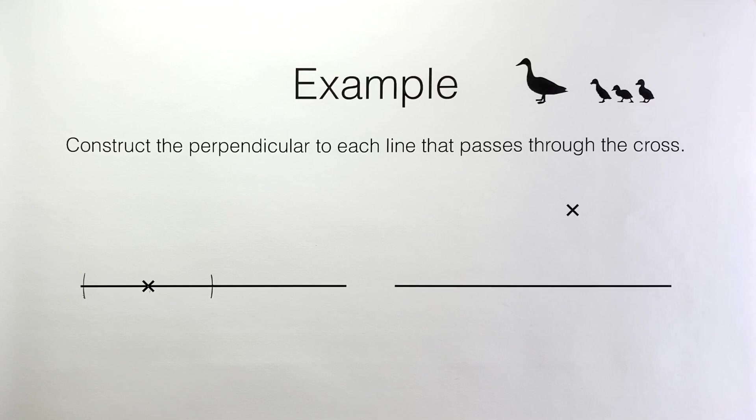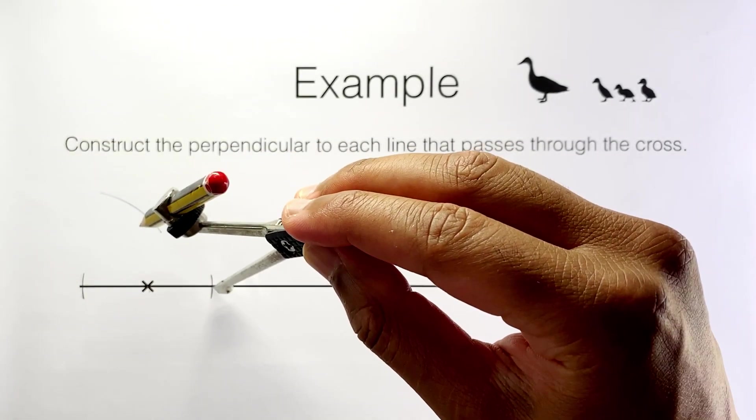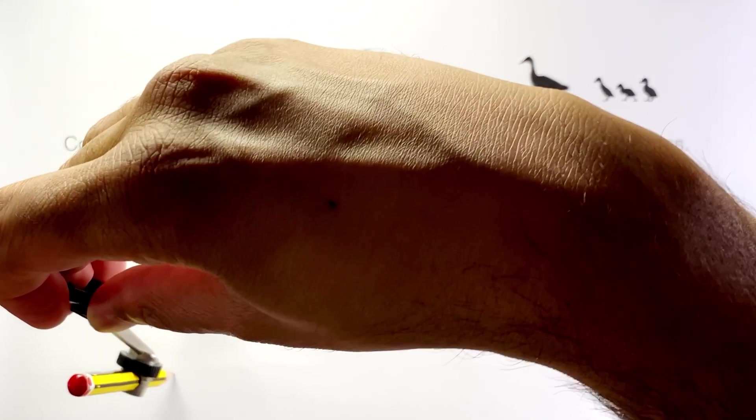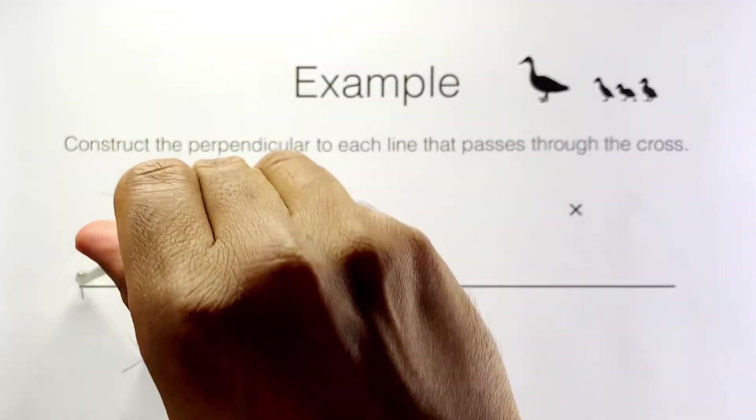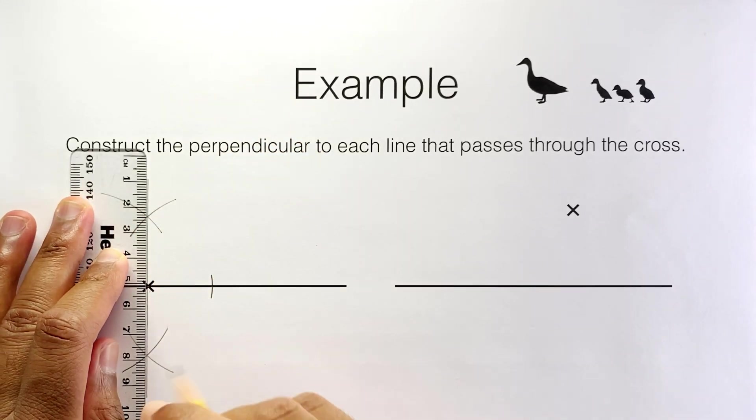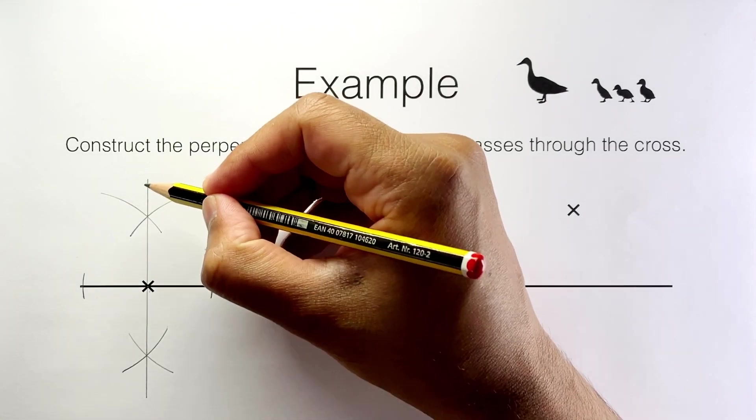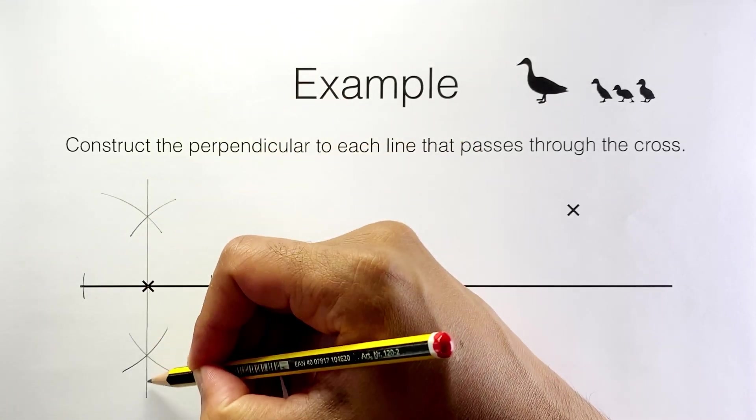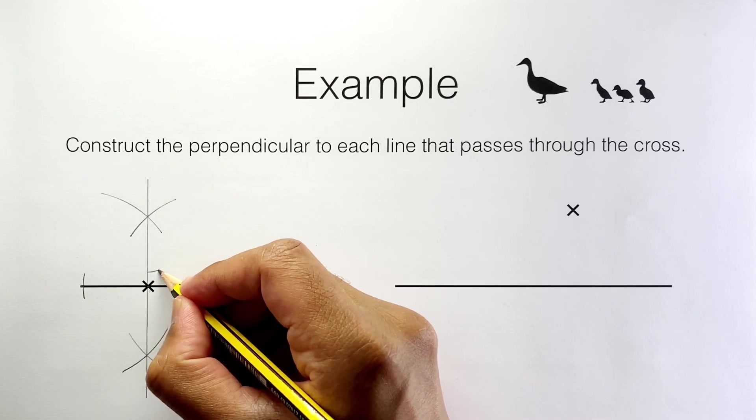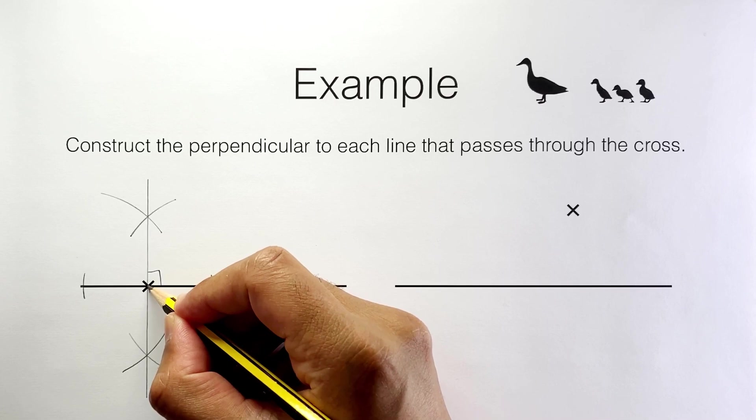Using the steps from the earlier video on perpendicular bisectors, that process looks like this and that's it for the first one. I have constructed a line, or a line segment to be precise, that is perpendicular to the one we were given and it goes through that point there.